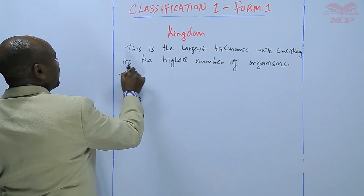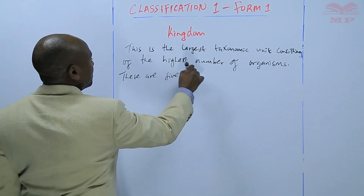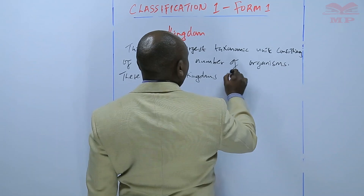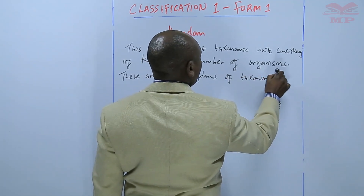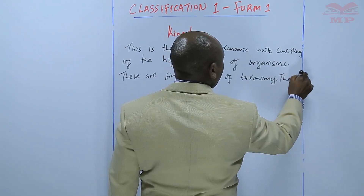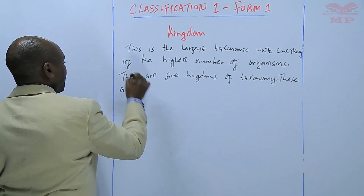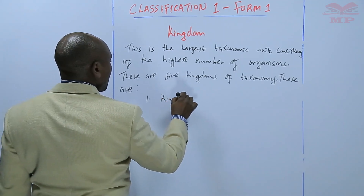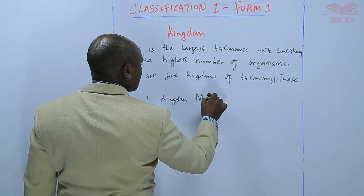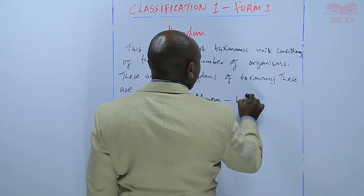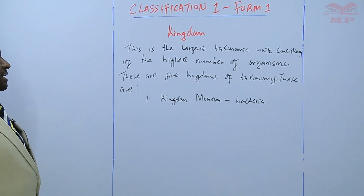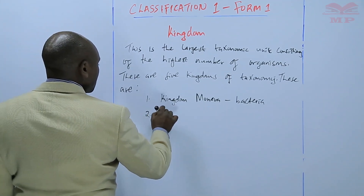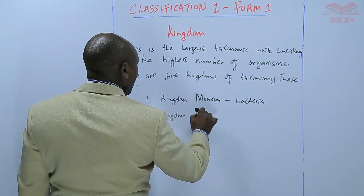In taxonomy, there are five kingdoms. The first is kingdom Monera, and in this kingdom we have bacteria. The various types of bacteria are in the kingdom Monera.